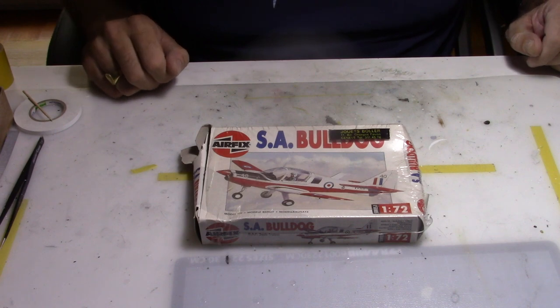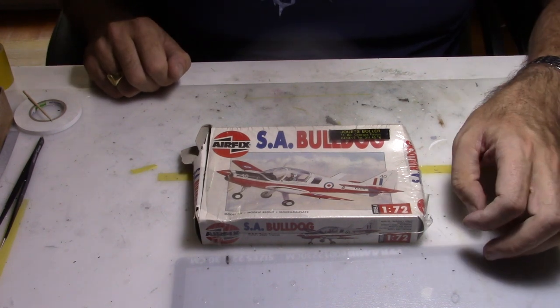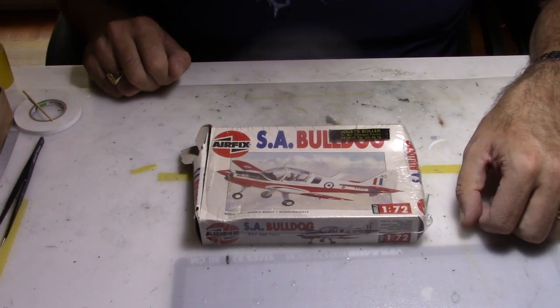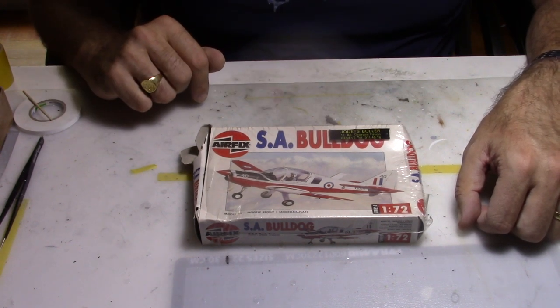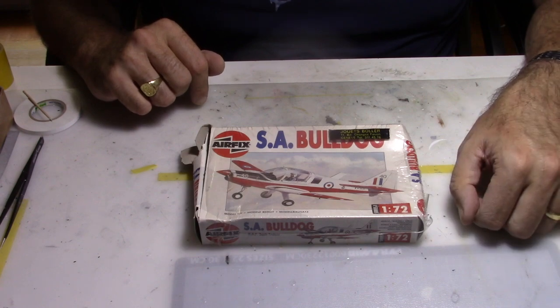Hi everybody and welcome back to my modeling channel. Today we're going to build a little single-engine prop aircraft called the Bulldog, and it's going to be on scale 1:72 from Airfix.